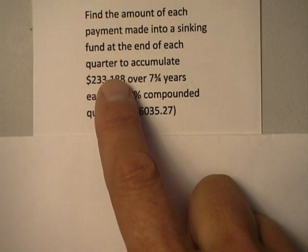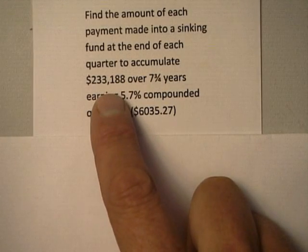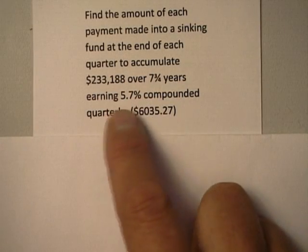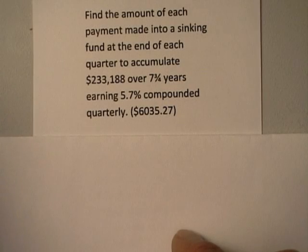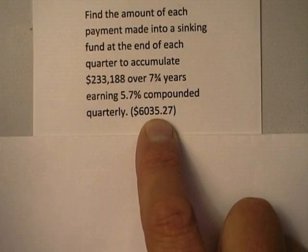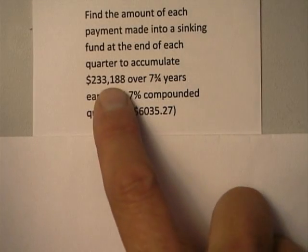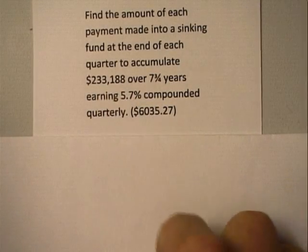They want to accumulate this much money over seven and three quarters years. So what we want to do is figure out what the payment should be in order to end up with this value right here.